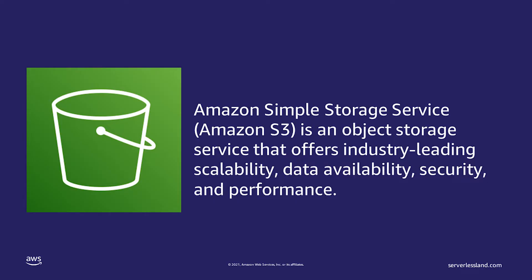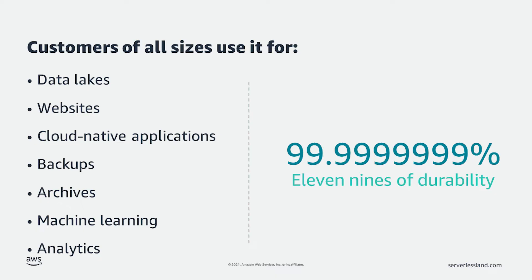Amazon Simple Storage Service, Amazon S3, is an object storage service that offers industry-leading scalability, data availability, security, and performance. This means customers of all sizes and industries can use it to store and protect any amount of data for a range of use cases such as data lakes, websites, cloud-native applications, backups, archives, machine learning, and analytics. Amazon S3 is designed for 99.999999999 — 11 nines of durability — and stores data for millions of customers all around the world.